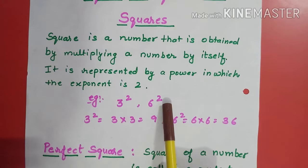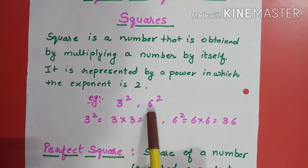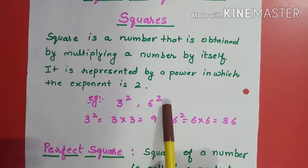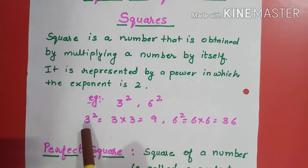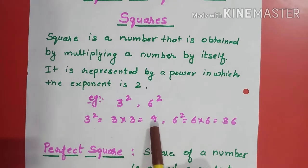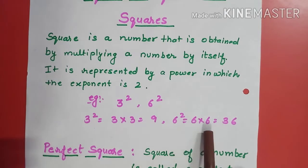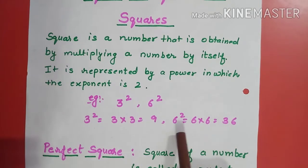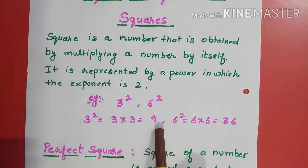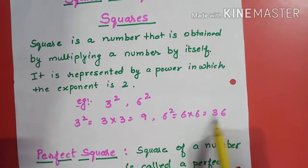3 raised to power 2 can be called as 3 square, and 6 raised to power 2 equals 6 square. So 3 square is 3 multiplied by 3, which gives me 9. Similarly, 6 square is 6 multiplied by 6, which gives me 36. So 6 ka square 36 and 3 ka square 9.